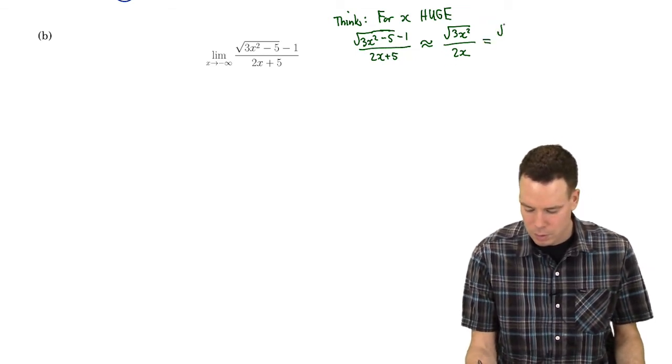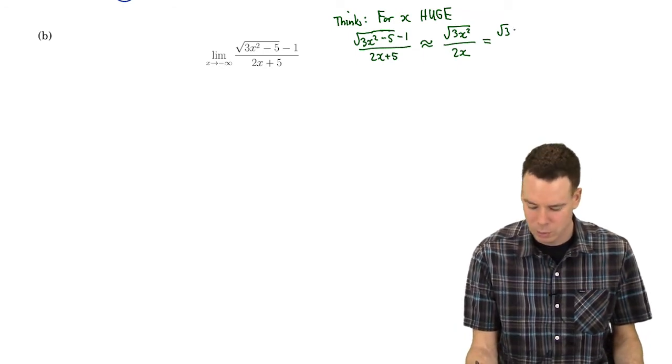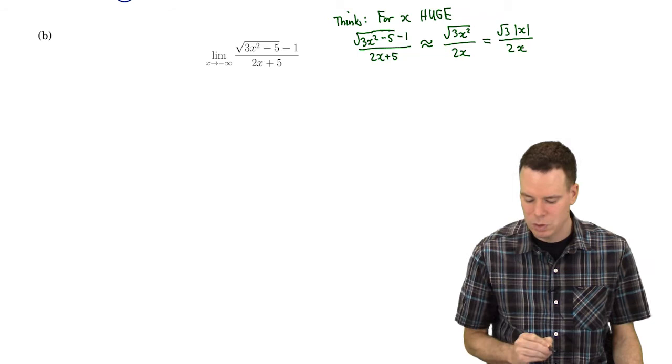Now the top is the square root of three times the square root of x squared. What's the square root of x squared? Well that's just the absolute value of x and on the bottom we have 2x.